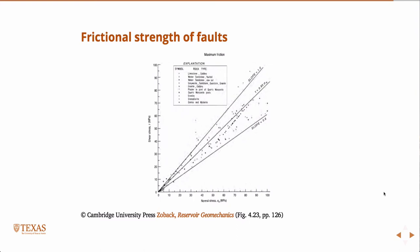A good rule of thumb is just to use 0.6. If I don't specifically tell you what the coefficient of friction is for a rock, just assume it's 0.6. In Zoback's book he quotes another famous rock mechanics author, Jaeger, saying something like 'coefficient of friction of rocks is always 0.6 until it isn't.' In this class we'll almost always just use 0.6.